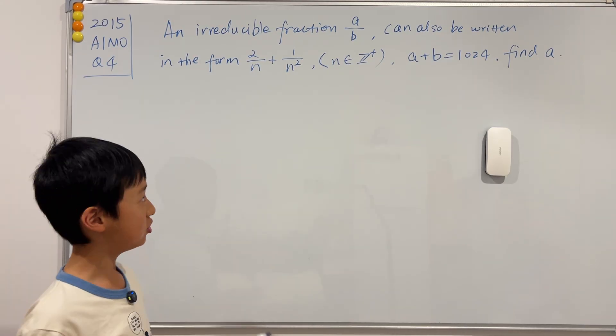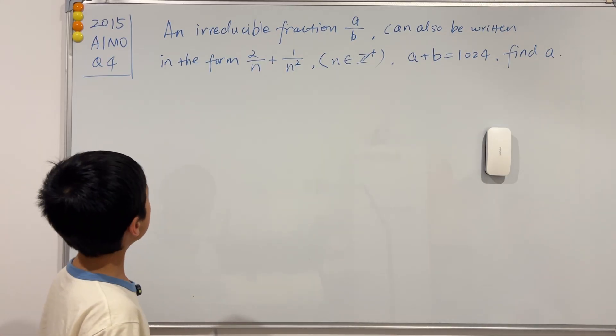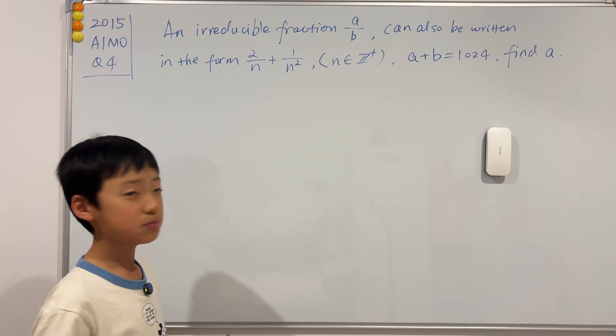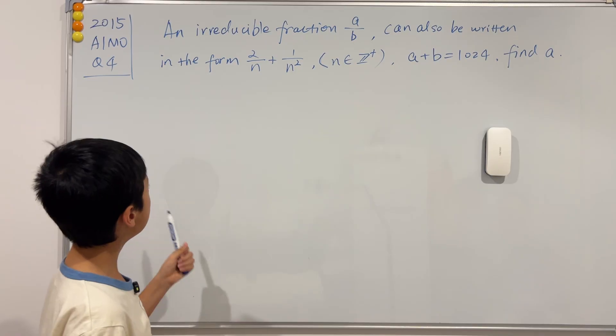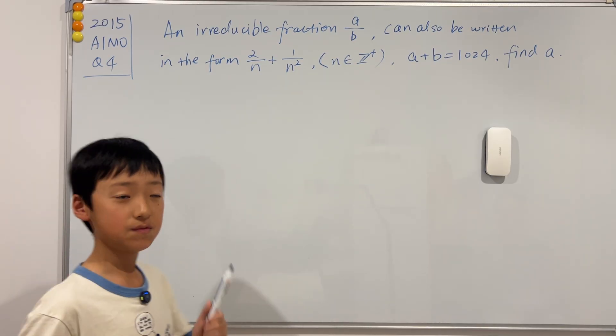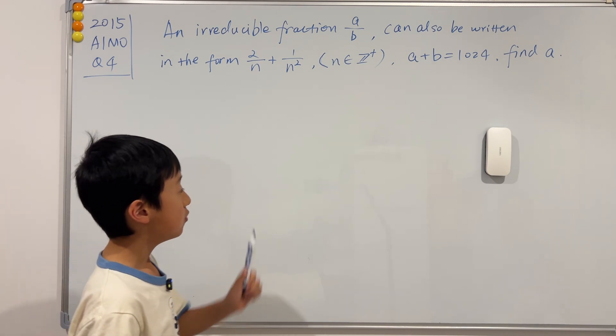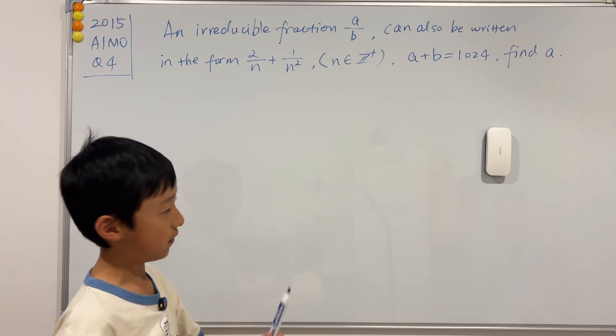This question is actually going to be kind of a relaxed question. It says that an irreducible fraction A over B can also be written in the form 2 over N plus 1 over N squared, where N is a positive integer. We know that A plus B is 1024, and our job is to find A.